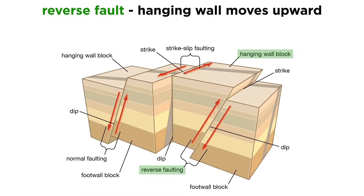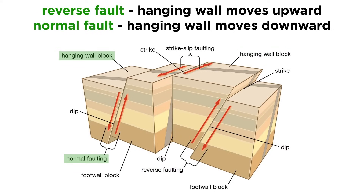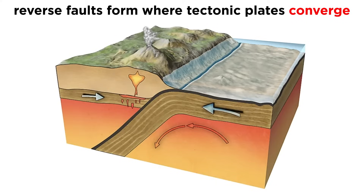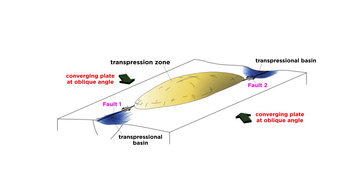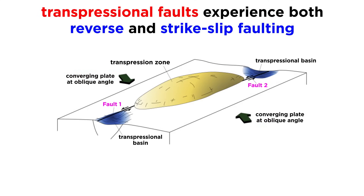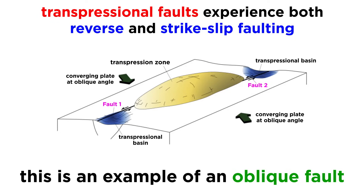In reverse faults, the hanging wall moves upward, and in normal faults, it moves downward. Reverse faults primarily form in areas where the tectonic plates are converging, like along subduction zones and continent-continent collisions. There are also areas where the plates are converging at an angle. These transpressional faults experience both reverse and strike-slip faulting. A fault with both dip-slip and strike-slip motion is called an oblique fault.